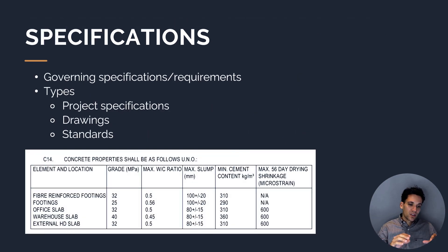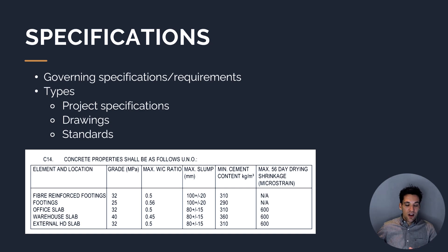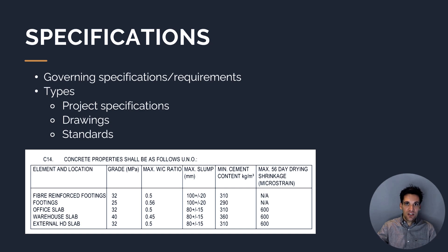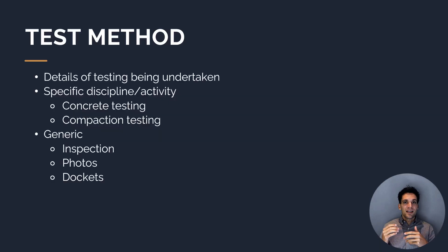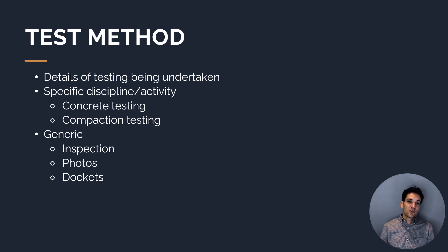Next to each step in the construction work, we document the relevant specifications — there'll be a specification that governs whether it's done correctly. These specifications might come from project specifications, notes on drawings, or relevant standards. For example, if we're installing concrete reinforcement, there'll be a specification stating the required cover on the reinforcement, and that's what we need to check. Then we document the test method — the test or check we're doing to ensure the work is done correctly — which could be concrete testing, compaction testing, visual inspections, recording photos, or collecting material dockets.